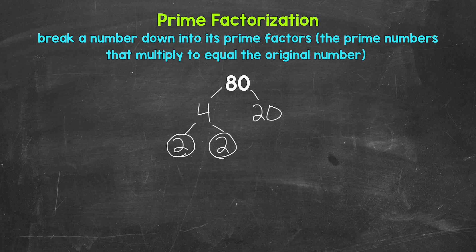So let's circle those 2s to show that we have prime numbers. Now let's move over to 20 — we need to think of factors of 20. Well, 2 and 10 are factors of 20. 2 times 10 equals 20. So let's break 20 down into 2 and 10. 2 is a prime number, so we are done here.